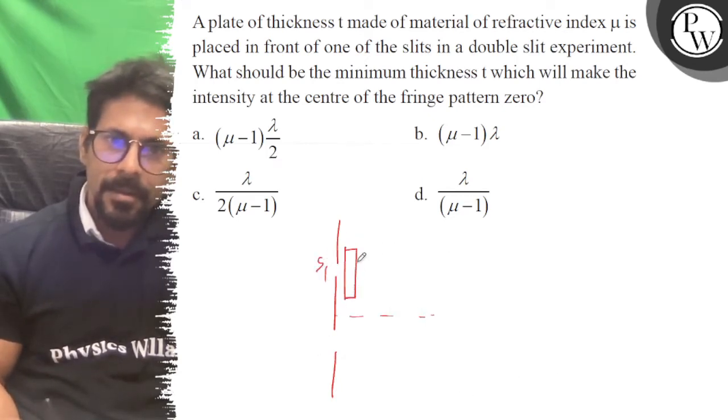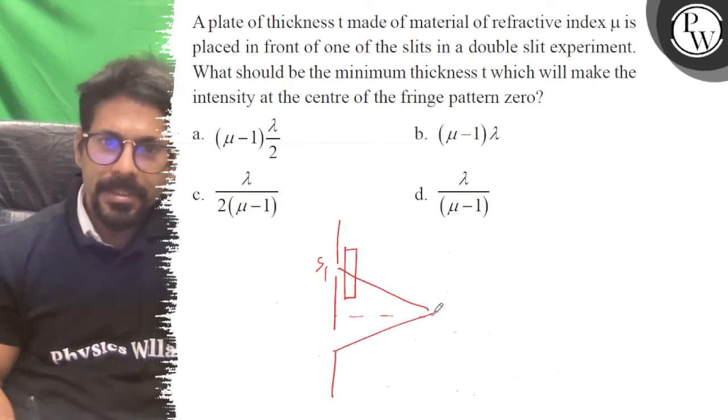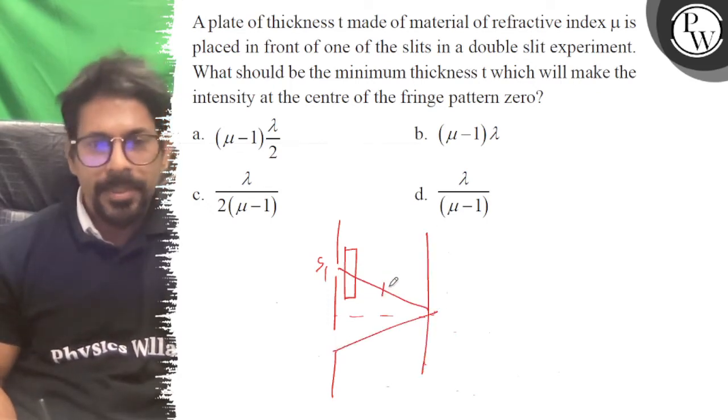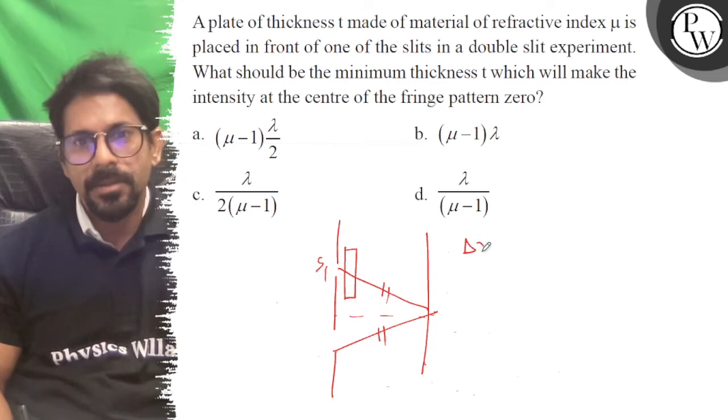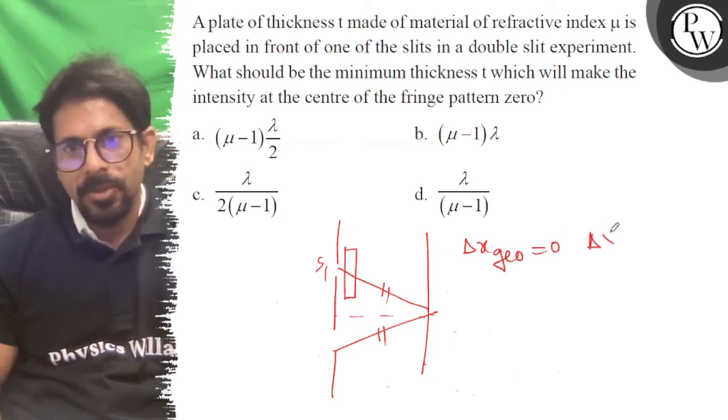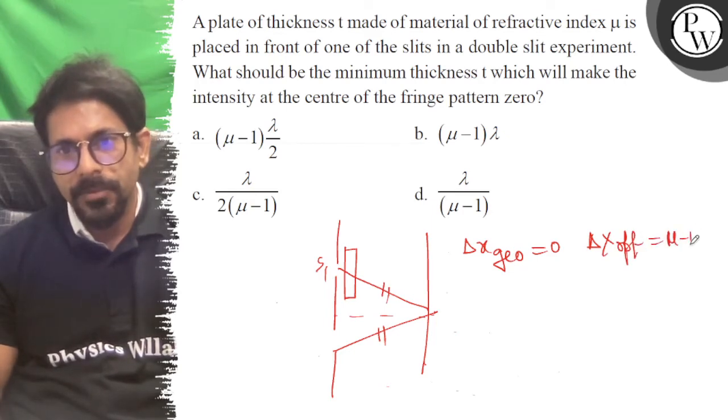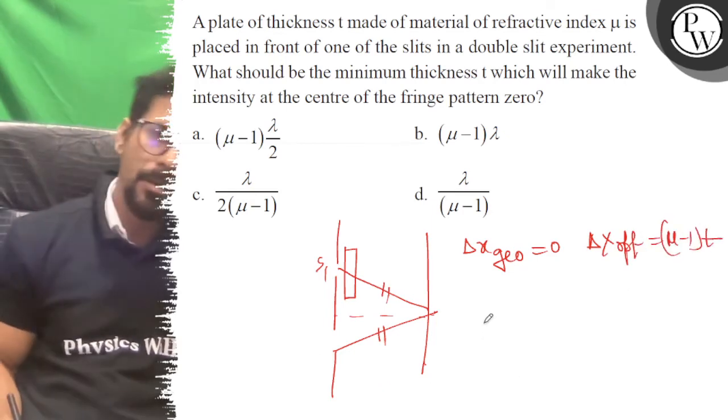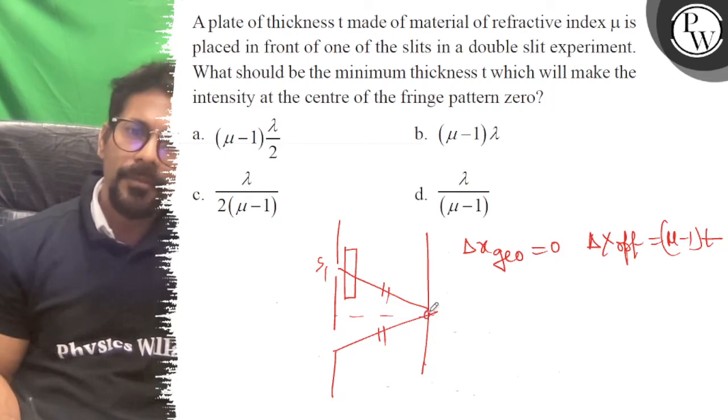If we can see the center here, geometrically its path difference is zero. Geometrically, but optically it will be (μ - 1) into t. Clear? Now what we want, we want that intensity turn out to be zero here.